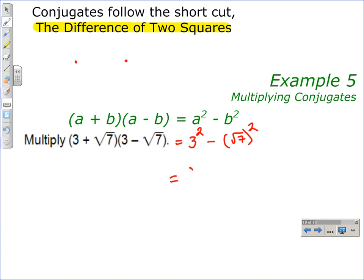3 squared is 9, the square root of 7 squared is 7, and we must subtract them. So when multiplying these two conjugates, it reduces or simplifies to the whole number 2.